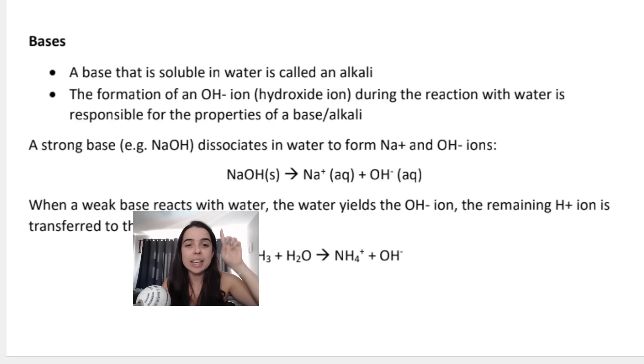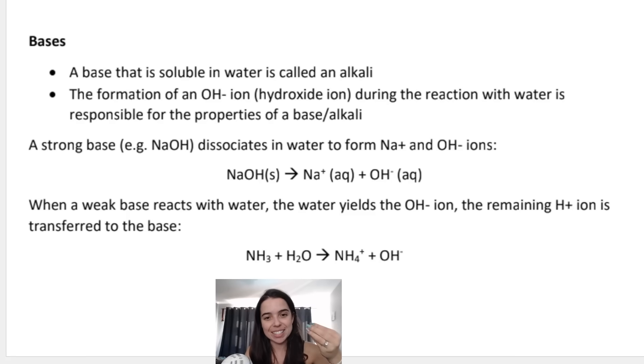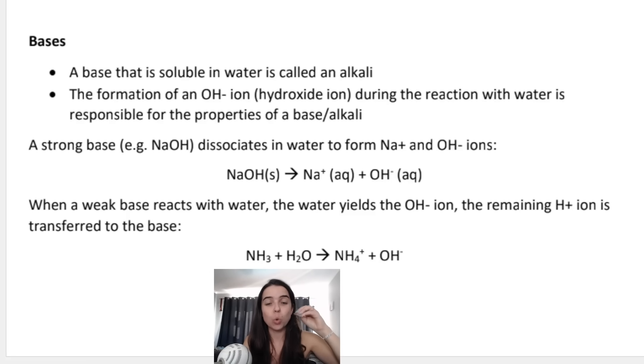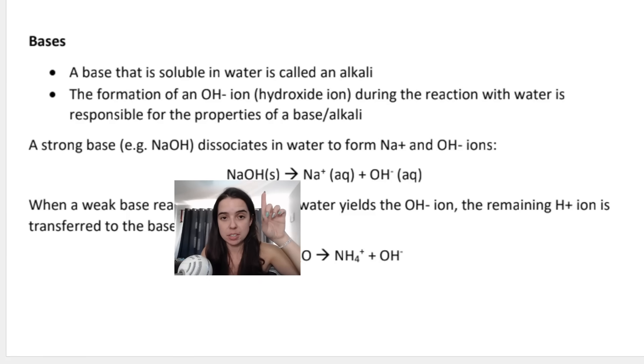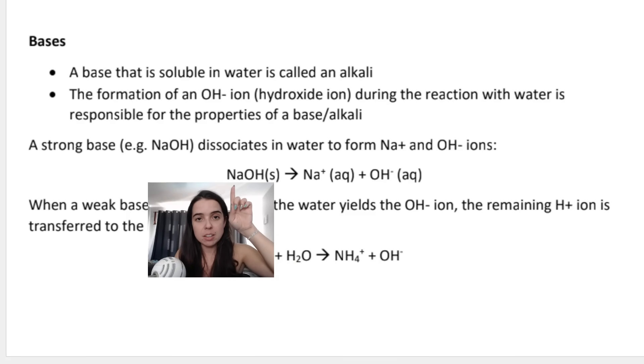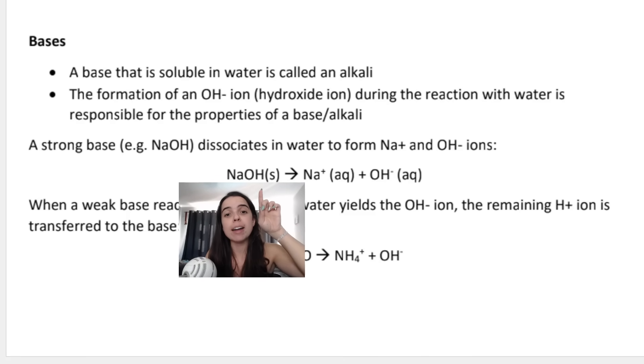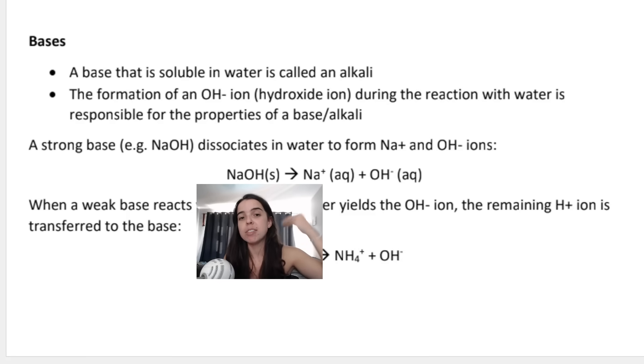This weak base called ammonia actually ionizes. The reason this one dissociates and this one ionizes is because the ones that dissociate break up into their ions. These are ionic substances consisting of a metal, the sodium ion Na+, and OH- the anion.